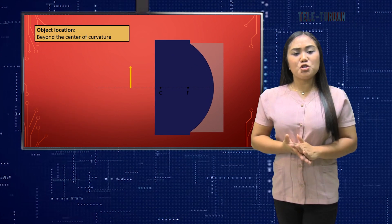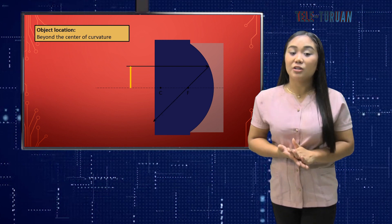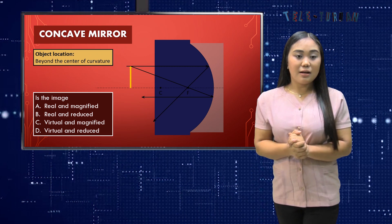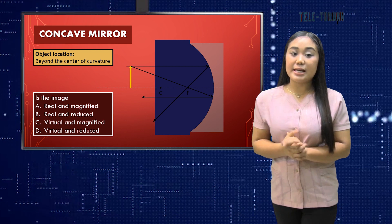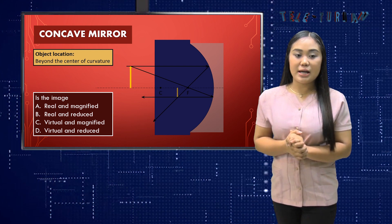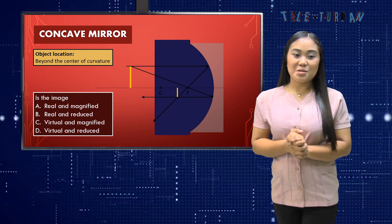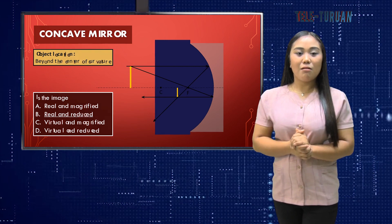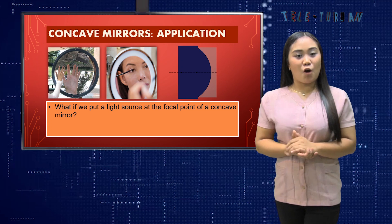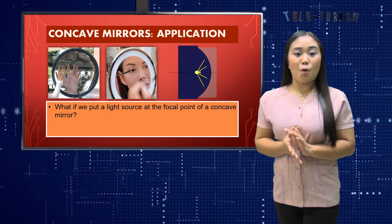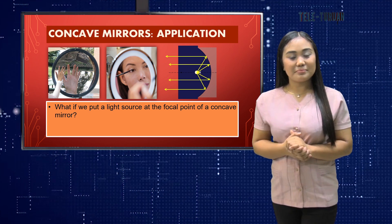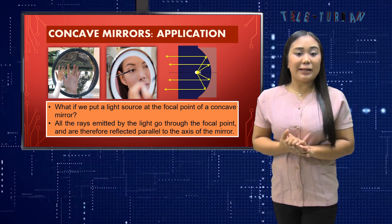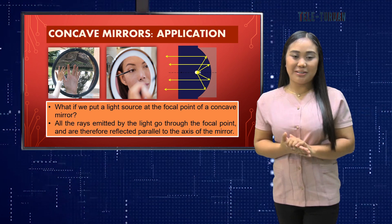Now try to give the image properties when the object is located beyond the center of curvature. Is the image A — real and magnified, B — real and reduced, C — virtual and magnified, or D — virtual and reduced? The answer is letter B, real and reduced. Very good. Now let's look at the application of concave mirrors. If we put a light source at the focal point of a concave mirror, all the rays emitted by the light go through the focal point and are therefore reflected parallel to the axis of the mirror.